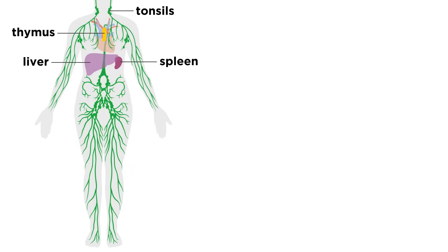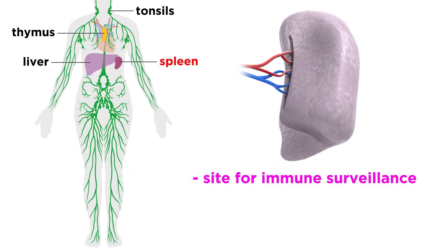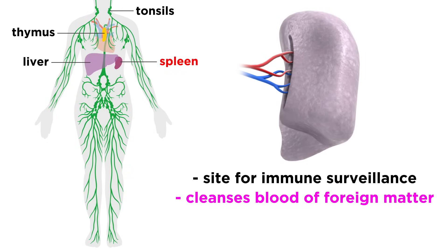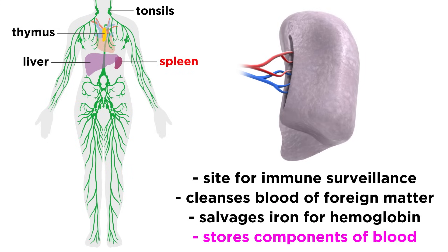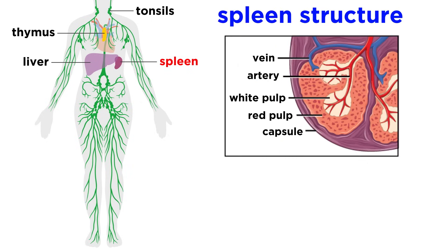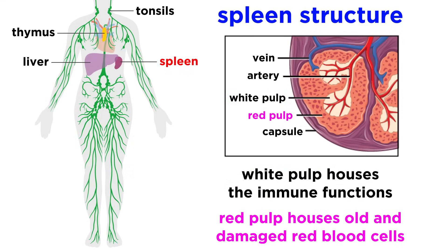There are a few other lymphoid organs of note, the first of which is the spleen. The spleen is adjacent to the stomach in the upper left part of the abdomen, and it serves as a site for immune surveillance and to cleanse blood of foreign matter. It also has the ability to salvage iron for hemoglobin production, and store other components of blood for release when necessary. Structurally, the spleen has two components called white pulp and red pulp. White pulp houses the immune functions of the spleen, while red pulp is where old and damaged red blood cells are removed from circulation.